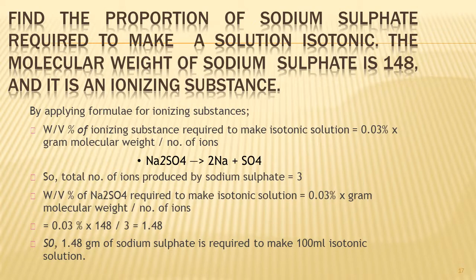Next example: find the proportion of sodium sulfate (MW = 148, ionizing) required to make an isotonic solution. We determine how many ions are produced. Applying the formula: 0.03 × (148 / 3) = 1.48 g of sodium sulfate required per 100 ml to make an isotonic solution. Simply apply the numbers to the equation.